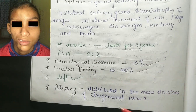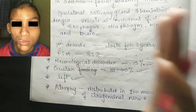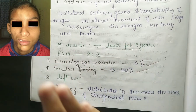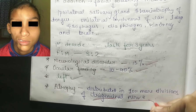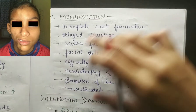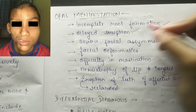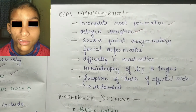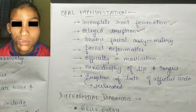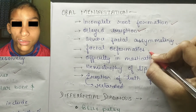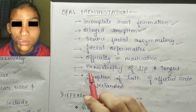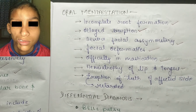Ocular findings are seen in 10–40% of cases. In contrast to facial hemi hypertrophy where left and right side involvement is equal, in facial hemi atrophy the left side is more commonly affected. Atrophy is distributed along one or more divisions of the trigeminal nerve. Oral manifestations include incomplete root formation and delayed eruption.